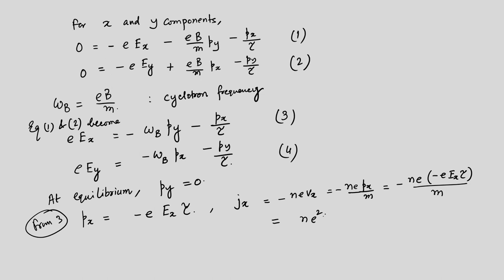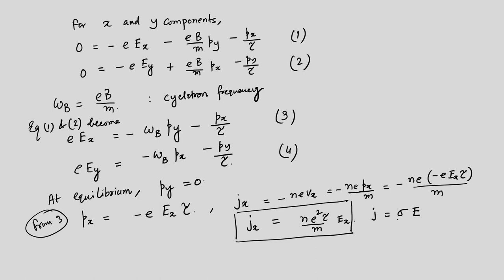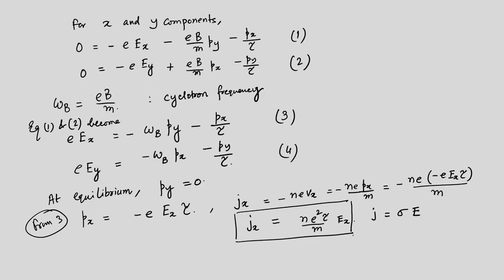So J_x = (ne²τ/m) E_x, which is a comforting equation — it is exactly a restatement of Ohm's law: J = σE, where σ is the conductivity. In our case σ is a tensor (2×2 matrix) of rank 2. Here J_x is in the direction of E_x, and σ = ne²τ/m is the known formula for conductivity of metals.